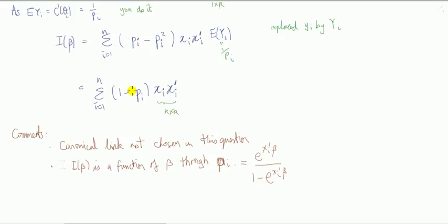Comments. Information is a function of beta. It says here. Well, where is the beta? The beta is in p. So p is a function of the betas through the logit link that we've used.